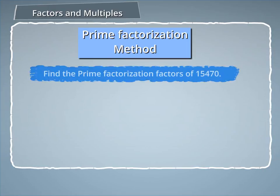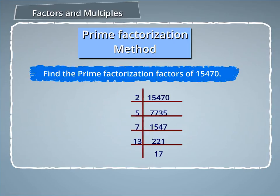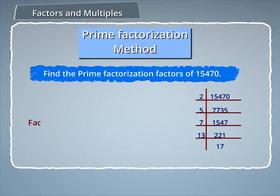Let us find the prime factors of 15,470 using the division method. After dividing 15,470 by 2, we get 7,735, which is divided by 5 to get 1,547. Dividing by 7 gives 221, and dividing by 13 gives 17. So the prime factors of 15,470 are 2 × 5 × 7 × 13 × 17.